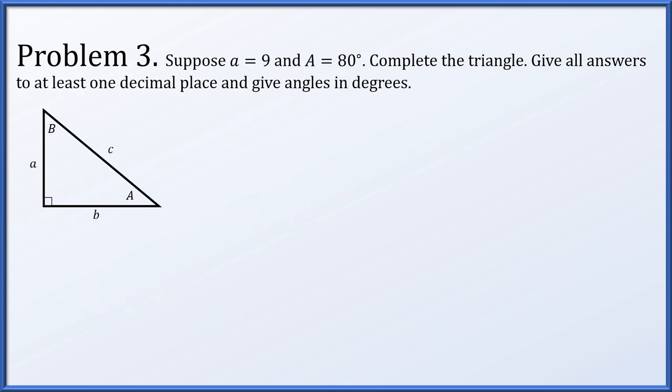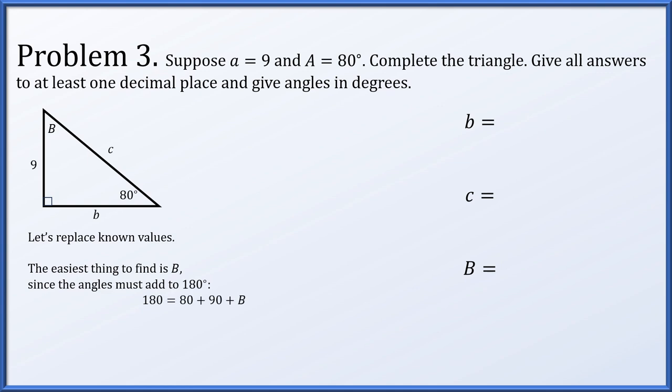Suppose side a is equal to 9 and angle A is equal to 80 degrees, complete the triangle, giving all answers to at least one decimal place and angles in degrees. So what we need to do is find two missing sides and one missing angle. Let's take our diagram and mark off what we know. The angle A was 80 degrees, the side a was 9. Now the easiest thing to find is the missing angle B. Because all the angles of a triangle add up to 180 degrees, we can quickly solve that B must be 10 degrees.